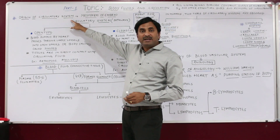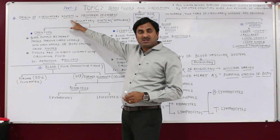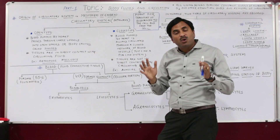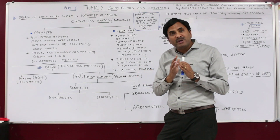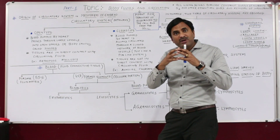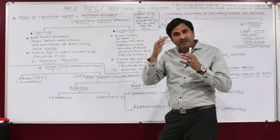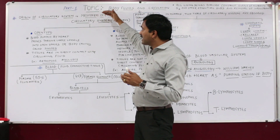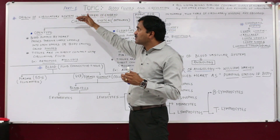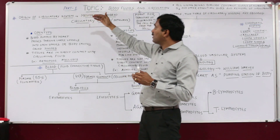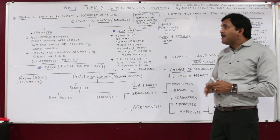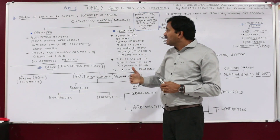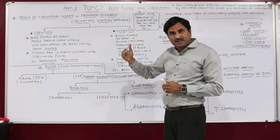We will be discussing the circulatory system overall. First, you must know that the origin of the circulatory system occurs from the mesoderm. All body parts are made up of different embryonic layers, and the mesoderm is the layer of the embryo responsible for the origin of the circulatory system.